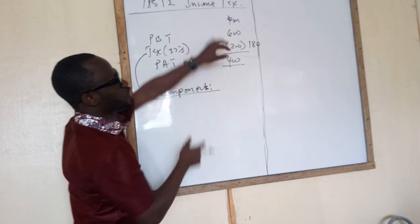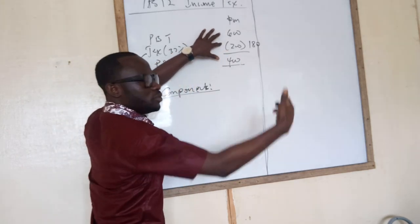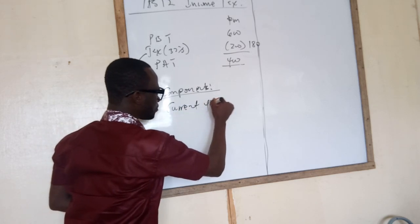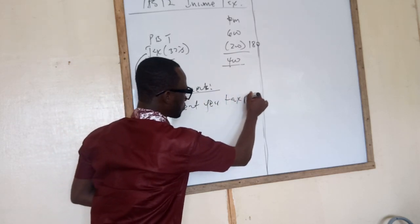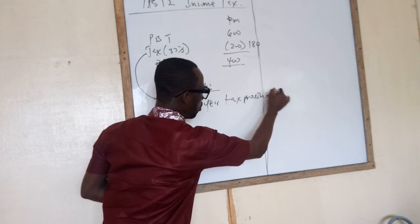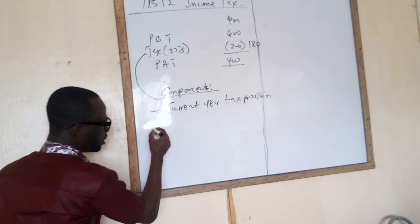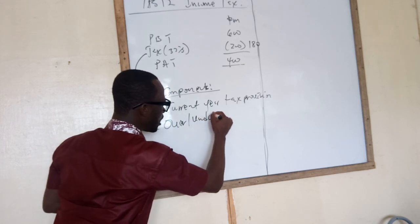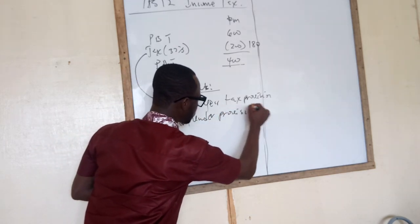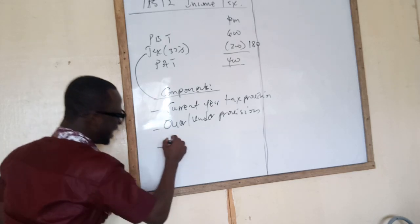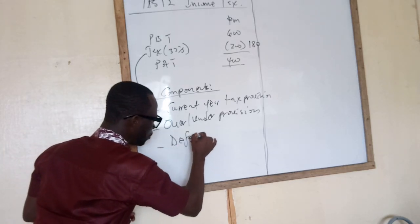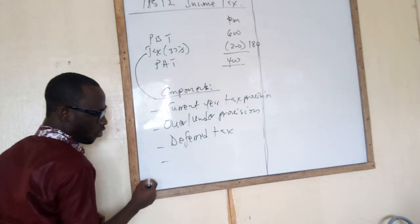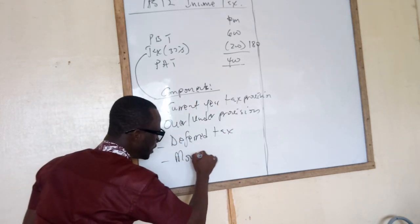What are these components of the tax figure we always put in the income statement? One: it includes the current year tax, which is always a provision — current year tax provision. Two: over or under provision of tax. Three: deferred tax, which is my favorite area. And four: movements in the fair value tax.